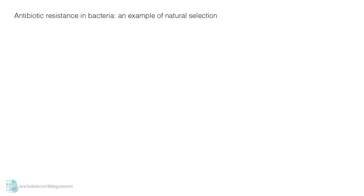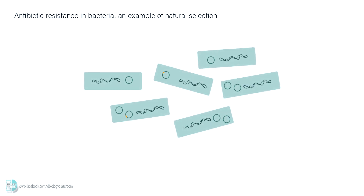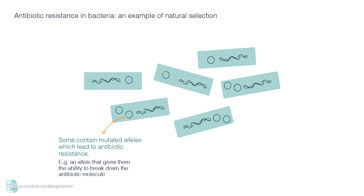Antibiotic resistance in bacteria is another good example of natural selection. First, there is variation in the population of bacteria. Some of them contain a mutated allele which leads to antibiotic resistance — for example, an allele that gives them the ability to break down the antibiotic molecule. This mutated allele may be pre-existing, meaning it is passed down from their ancestor, or the mutation occurs in the individual itself.